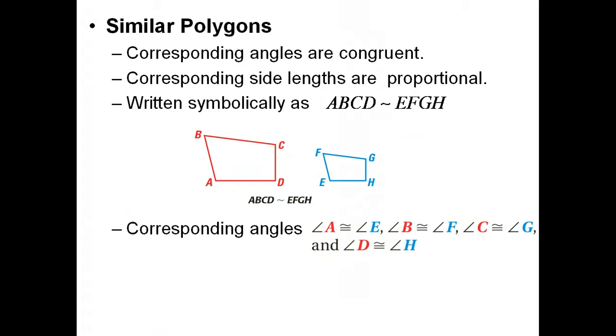Corresponding angles in this case, just like with congruent statements, you can pick them out from their location in the statement. Since A is first and E is first in the other one, then angle A matches up with angle E and is congruent.